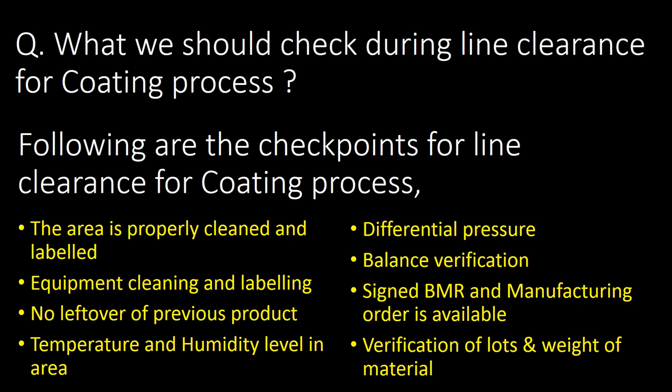What should we check during line clearance for the coating machine? Checkpoints include: area is properly cleaned and labeled, equipment cleaning and labeling, no leftover of previous product, temperature and humidity level in area, differential pressure, balance verification, signed BMR and manufacturing order is available, and verification of lots and weight of material.